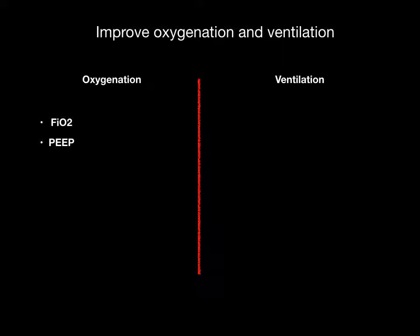If you have problems with oxygenation, you increase the FiO2 up to about 60%, or for short periods up to 100%. The other thing you can do is adjust the PEEP — you can increase the PEEP, which opens up the airways and allows for better oxygenation.